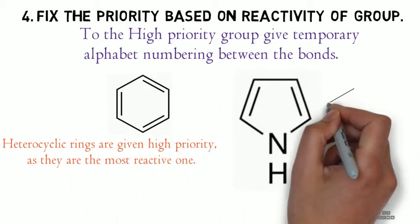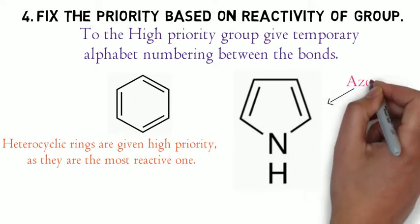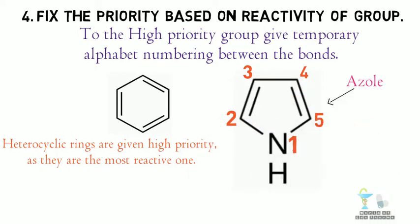the azole ring is given priority and they are numbered as 1, 2, 3, 4, 5, and given the alphabet labels such as A, B, C, D, and E.